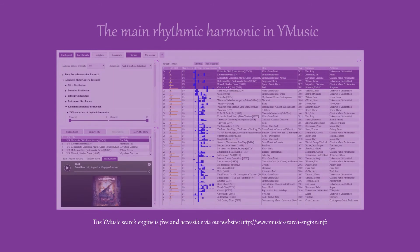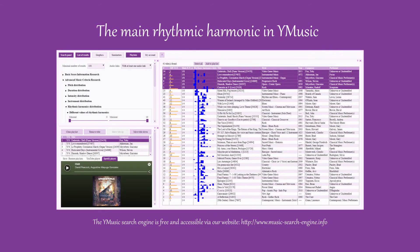In the YMusic search engine, open the tab Advanced Music Criteria Research, then Rhythmic Harmonics Distribution. Here we find five different parameters. Let us start by looking at Main Rhythmic Harmonic. We see that it is possible to find sixteen different basic harmonics, and that they range from one sixteenth to sixteen.